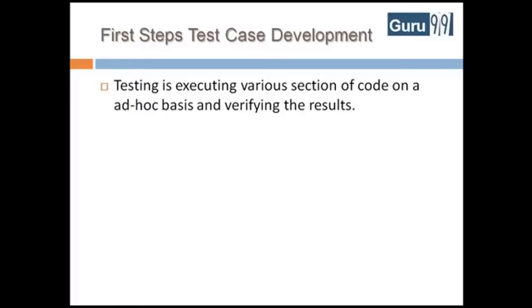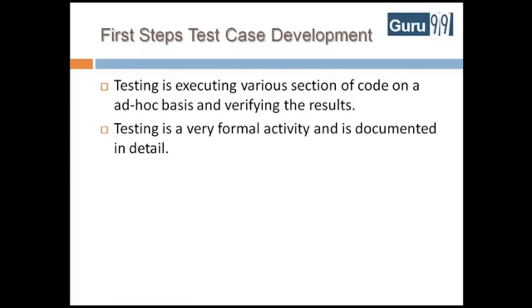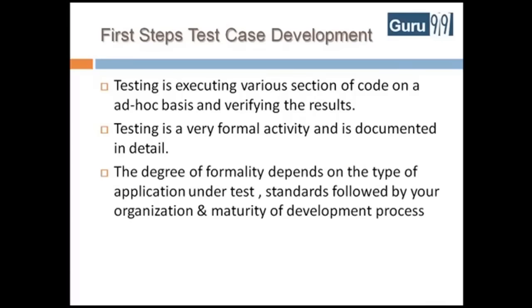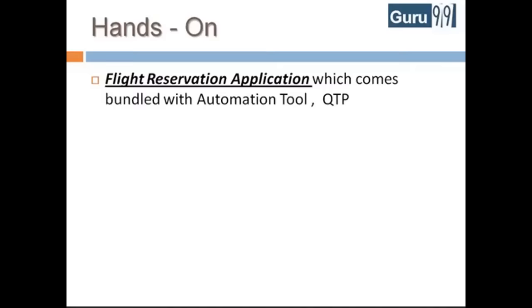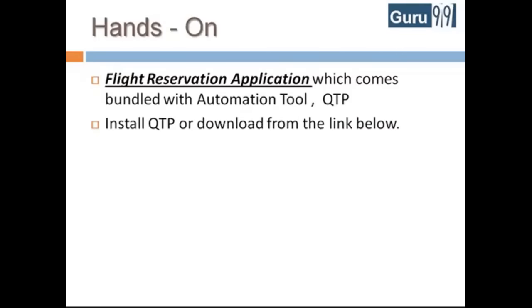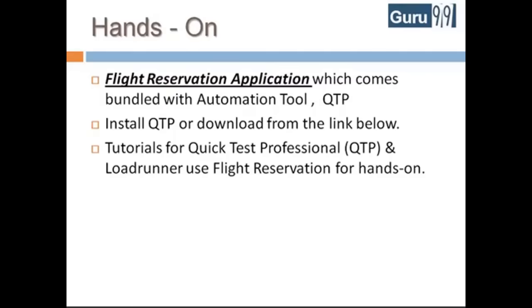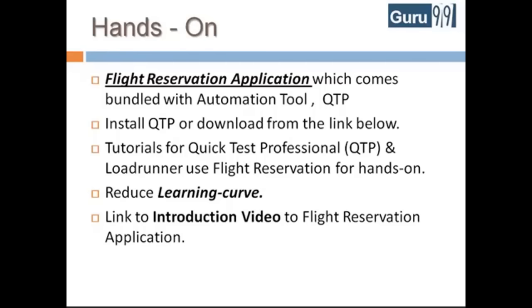As a beginner, it's easy to assume that testing is executing various sections of code on an ad hoc basis and verifying the results. But in the real world, testing is a very formal activity and is documented in detail. The degree of formality depends on the type of application under test, standards followed by the organization, and maturity of the development process. For all hands-on exercises, we will be using the Flight Reservation application, which comes bundled with Automation Tool QTP. Tutorials on this site for QTP and LoadRunner use Flight Reservation, so we have selected it to reduce your learning curve.